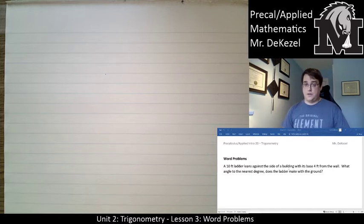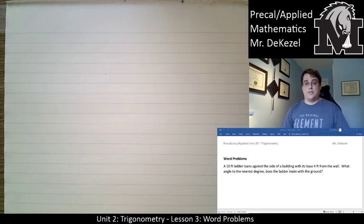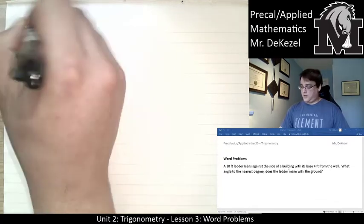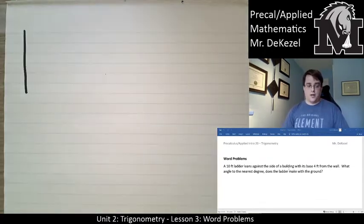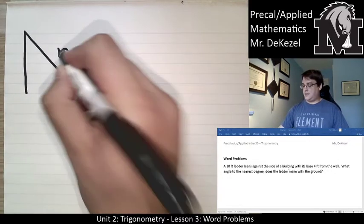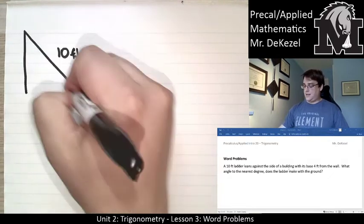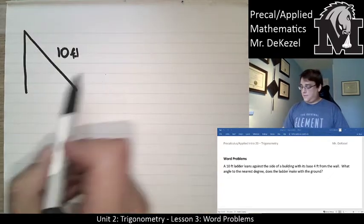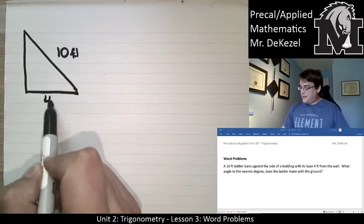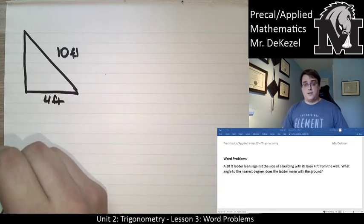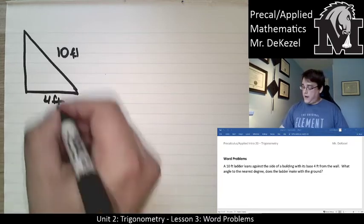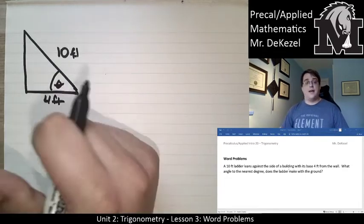The first problem is on screen: a 10-foot ladder leans against the side of a building with its base four feet from the wall. What angle, to the nearest degree, does the ladder make with the ground? Let's draw a wall, then a 10-foot ladder leaning against it. The base is four feet from the wall, and we want this angle between the ladder and the ground.